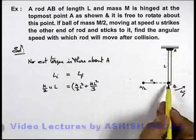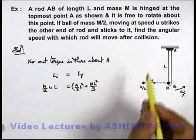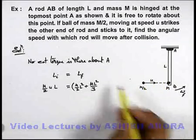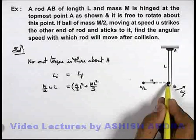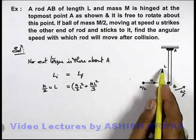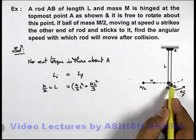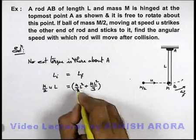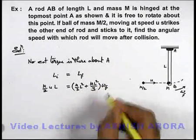As moment of inertia of just the rod about its axis of rotation, and this is the point mass which will revolve in a circle of radius L, so its moment of inertia can be used as MR², times omega_f.